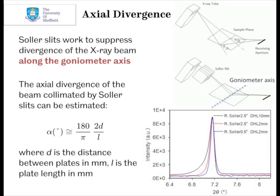X-rays travelling to the centre of the sample have a much shorter path than those travelling towards the outside — those diverging away from the goniometer axis. So by putting Soller slits in there, we can limit that axial divergence. The equation shown defines the axial divergence according to the size and spacing of the Soller slits: the longer the slits, or the more narrowly placed the plates, the lower the divergence angle. The graph shows the effect of axial divergence — for bigger Soller slits with greater spacing or shorter length, you see a real asymmetry on the low-angle side, sometimes called the umbrella effect. Broad peaks at low angles can hide other peaks, so the Soller slits really tidy up peak shapes.